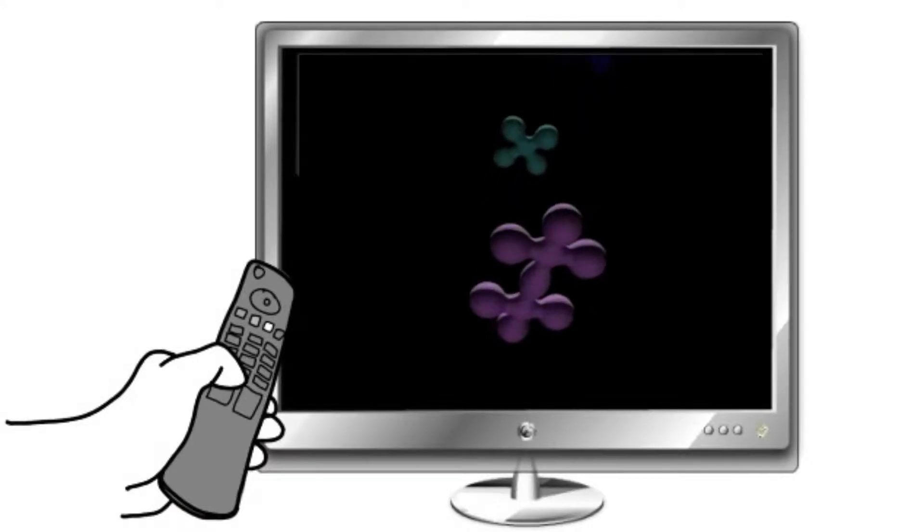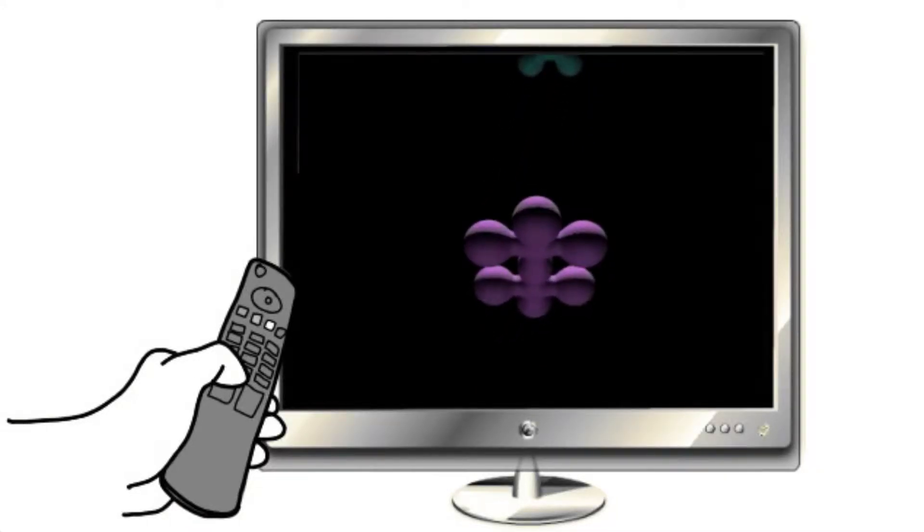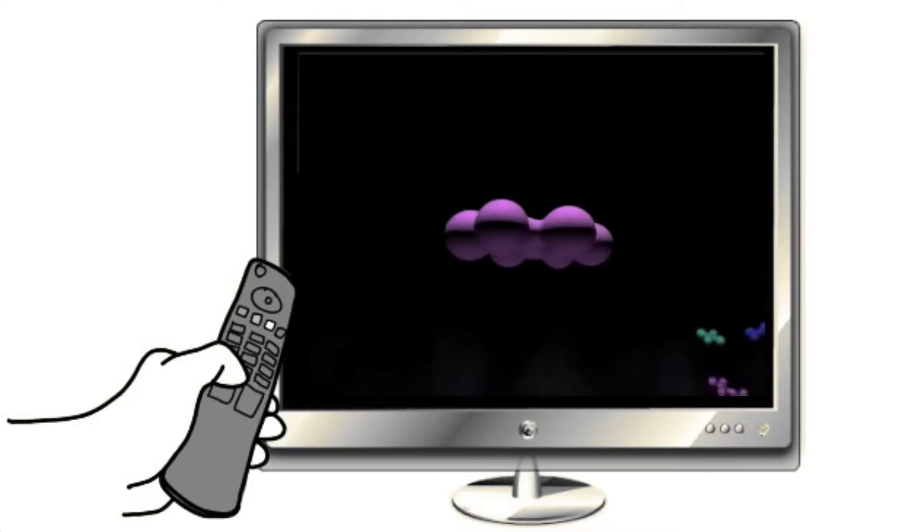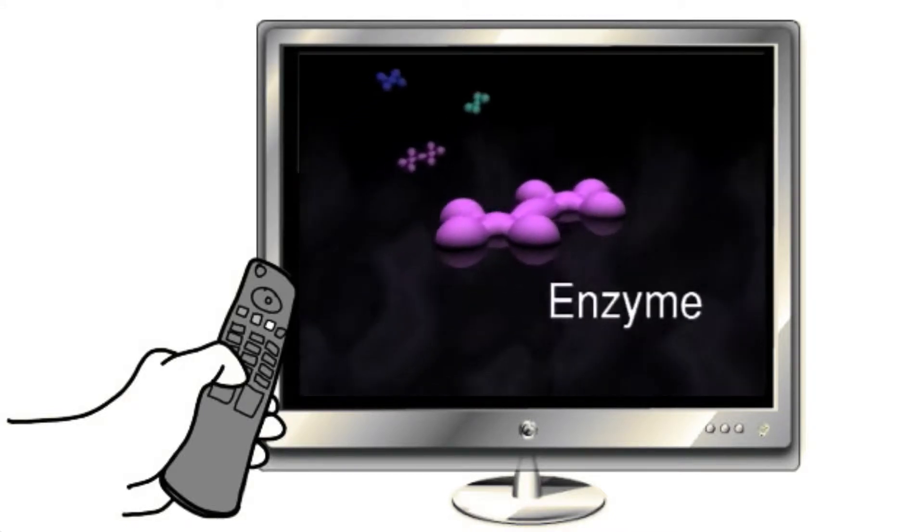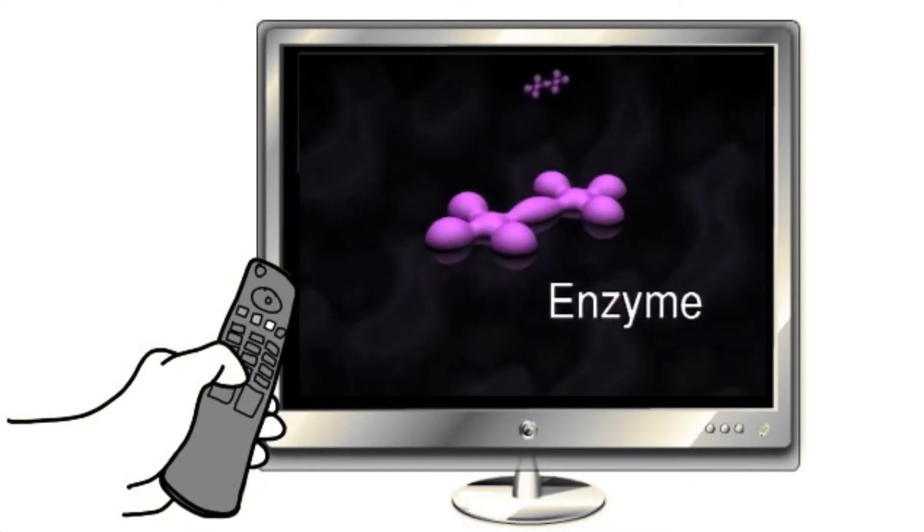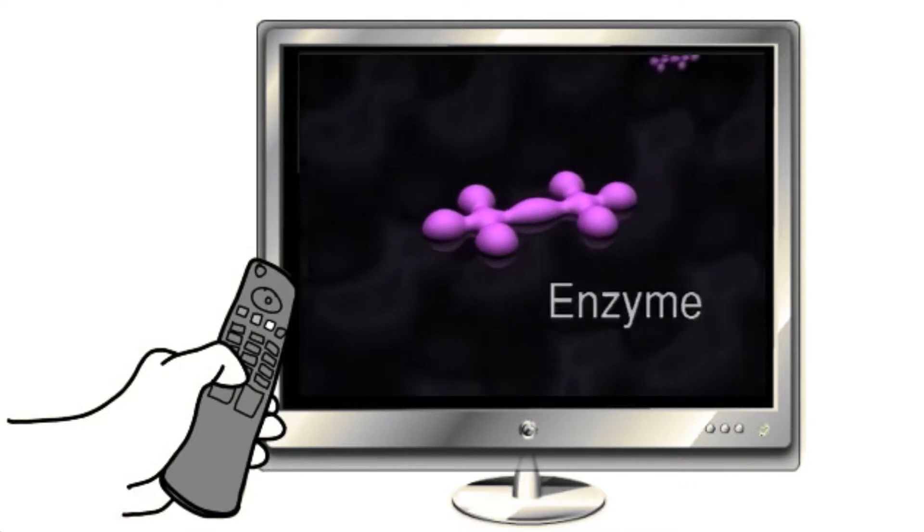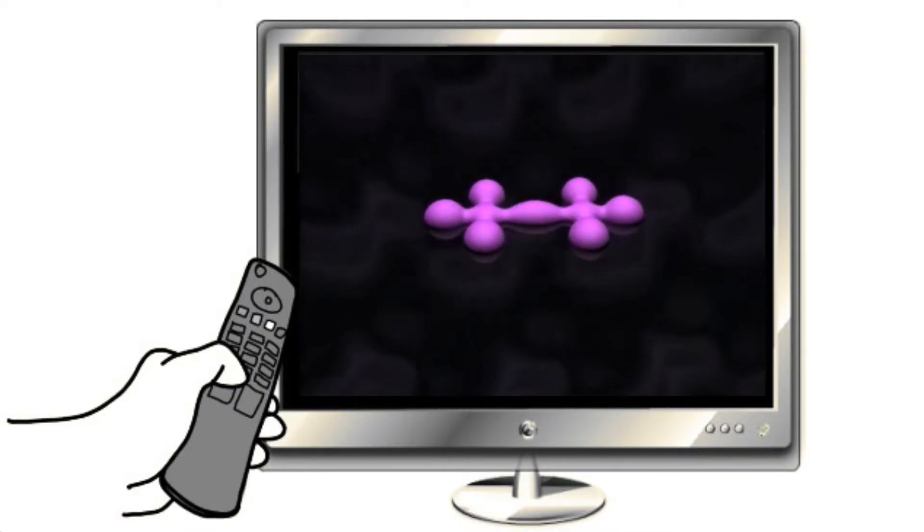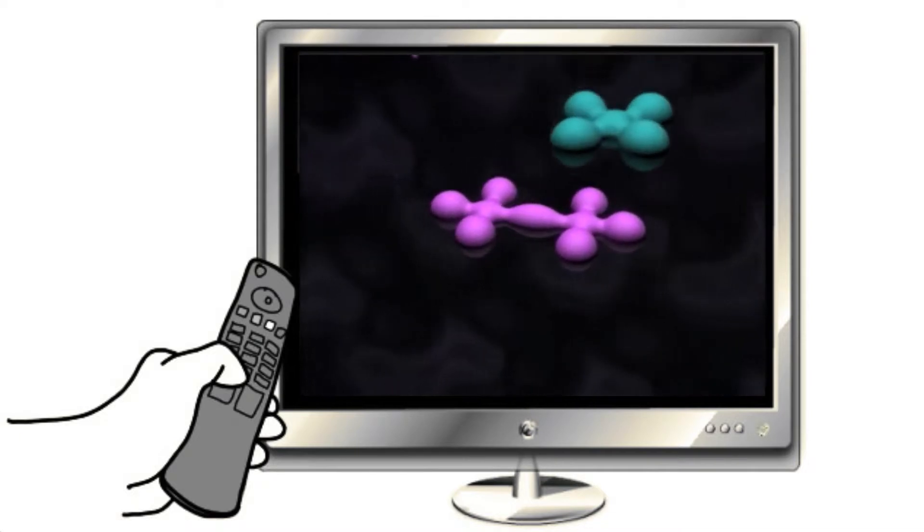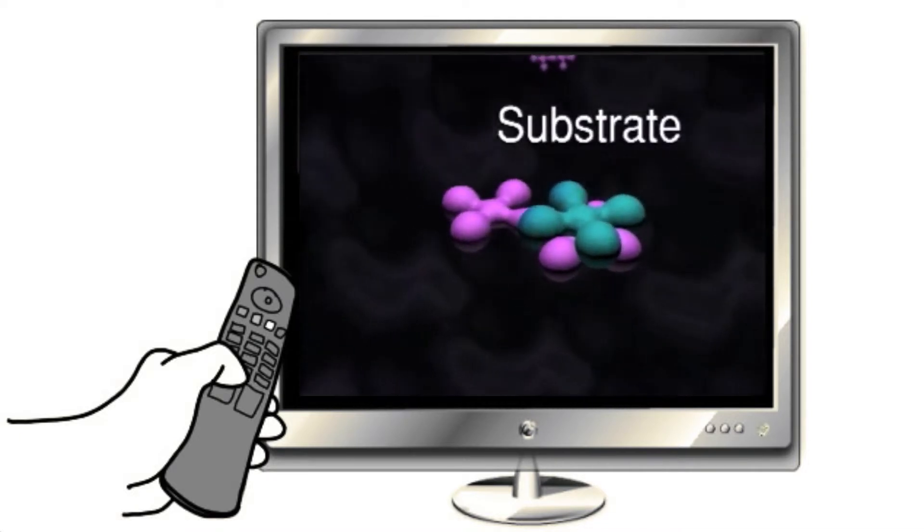Enzymes enable molecules called substrates to undergo a chemical change to form new substances called products. Each enzyme acts on a specific molecule or set of molecules called substrates. Each substrate fits into an area of the enzyme called the active site.